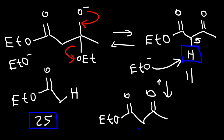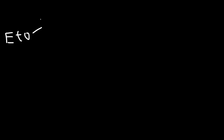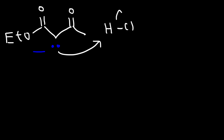This is the end result of the first step. While the solution is basic, everything is going to keep going back and forth until it reaches this product. This is the product for the first step of the reaction, and this step is not really reversible. Now the next thing we need to do is acidify the solution. So once we get this product, we need to react it with HCl, and this will give us our final product, which is the beta-keto ester.